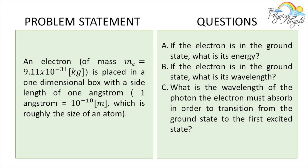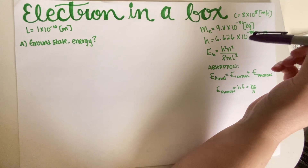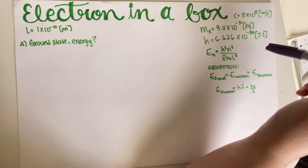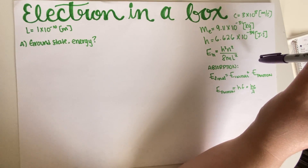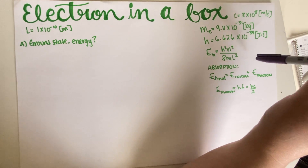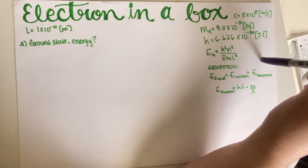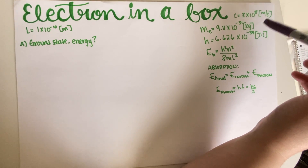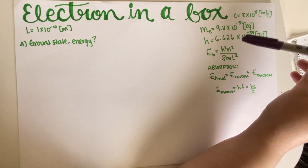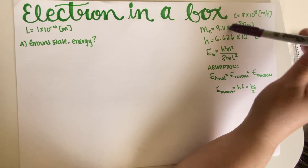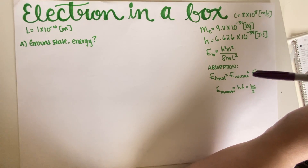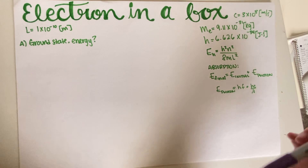I have my working space over here with a bunch of constants that the quiz provided. The PDF version of the quiz is in the description of the video. The provided equations include the particle-in-a-box energy formula, an equation for absorption, and the energy of the electron.